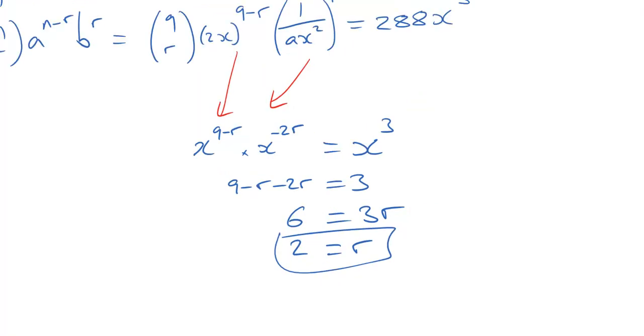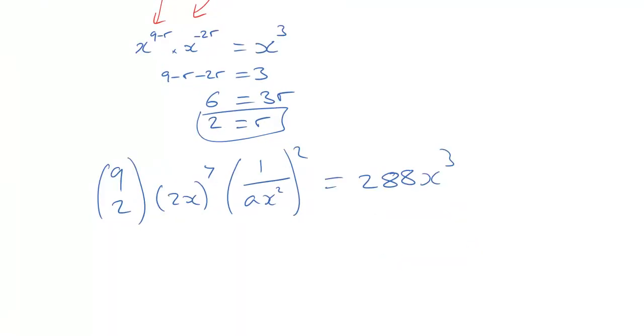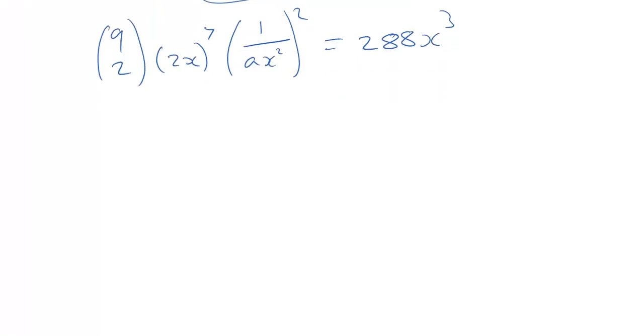Right. From there, we can then go and put that r is 2 back into the original expression. So we are going to have 9 choose 2 multiplying 2x to the power of 7. And we're going to have 1 over ax squared to the power of 2. And that's going to be equal to 288x cubed. Now, we already know that the x's work out because that's how we chose the r in the first place.